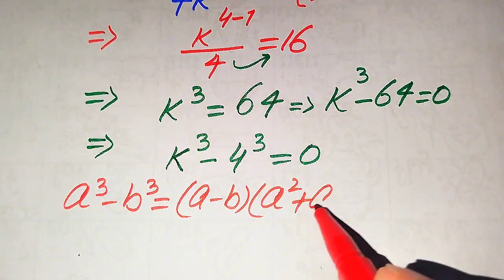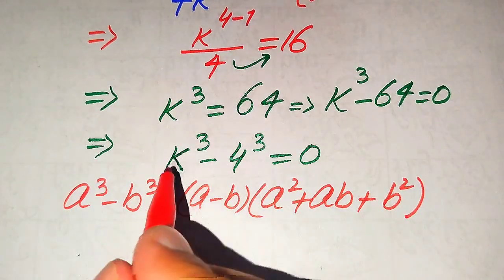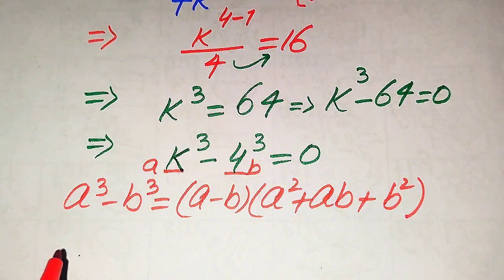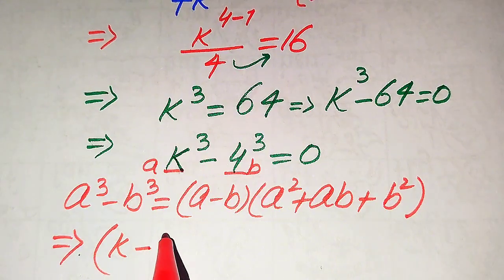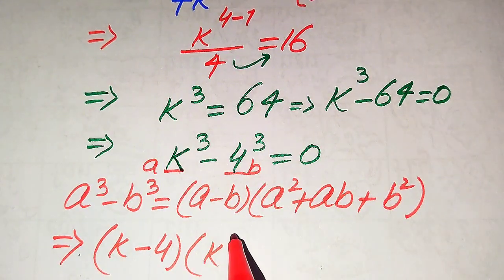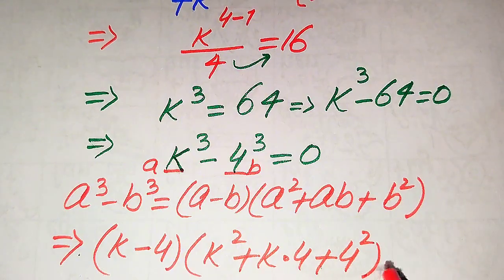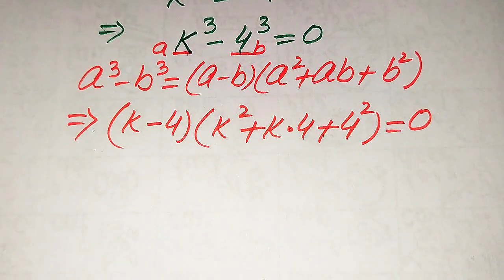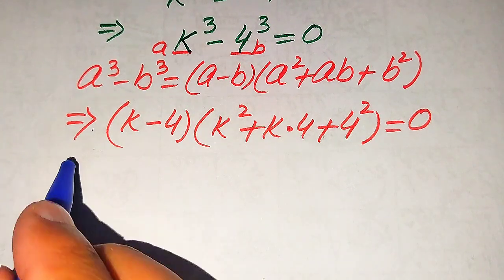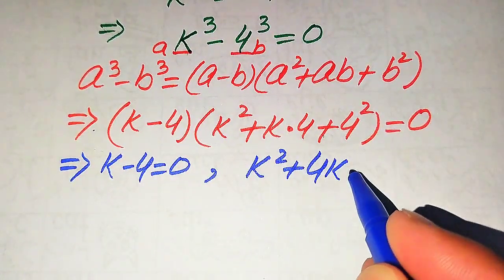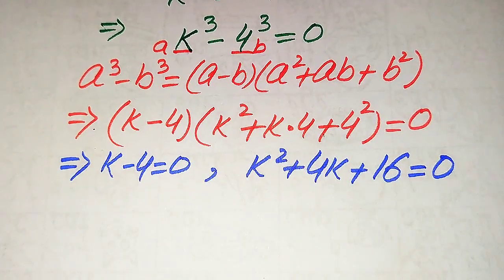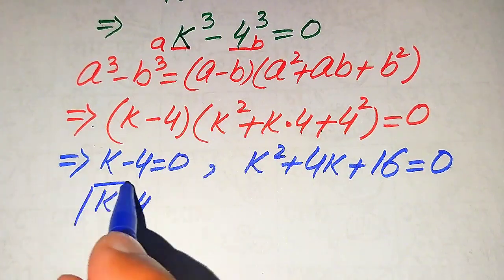The difference of cubes formula states: a cubed minus b cubed equals (a minus b)(a squared plus ab plus b squared). Here a is k and b is 4. Substituting, we get (k minus 4)(k squared plus 4k plus 16) equals 0. This gives us two cases: k minus 4 equals 0, which yields our first root k equals 4, and k squared plus 4k plus 16 equals 0 for the remaining roots.